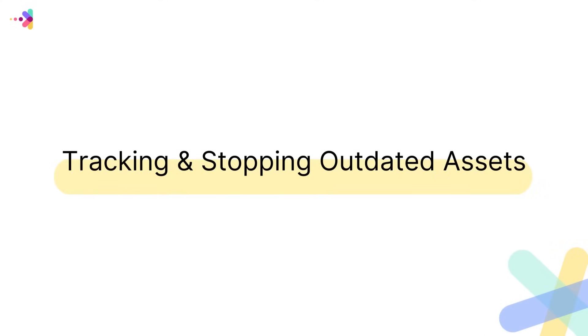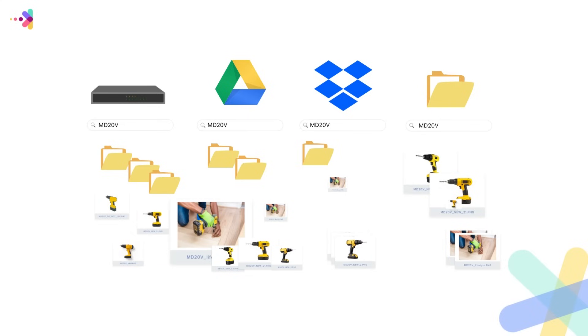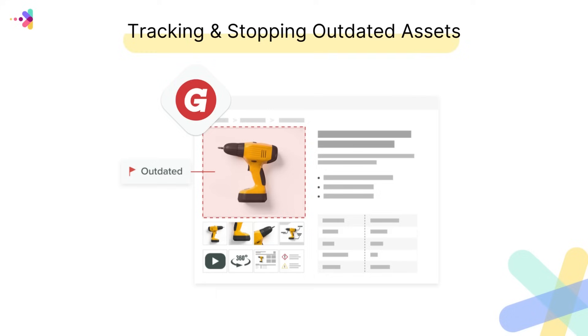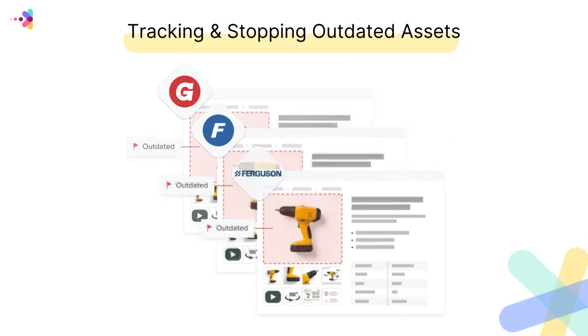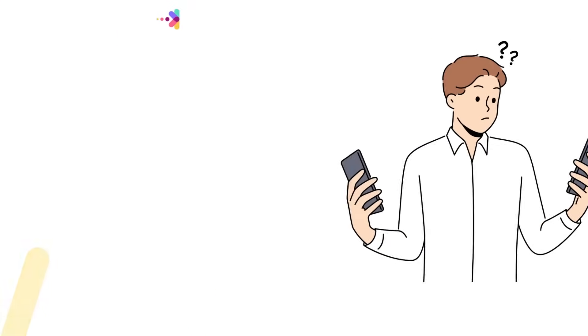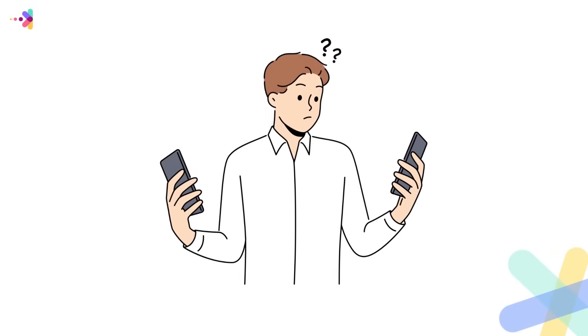Lastly, tracking and stopping the issue of outdated assets is a persistent challenge. If not managed correctly, outdated or obsolete images continue to circulate online, leading to confusion among customers. In order for customers to update images on their end, it's critical for brands to make the sharing and receiving process as straightforward and seamless as possible.